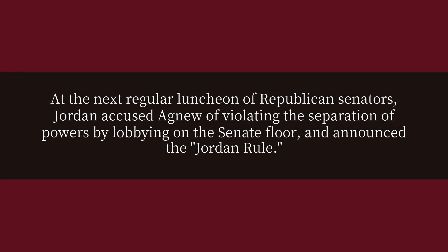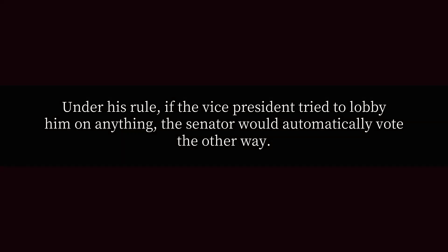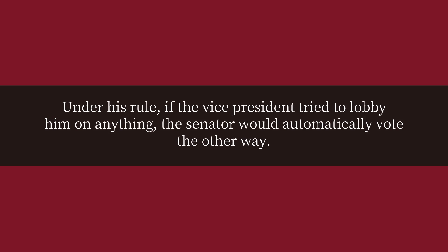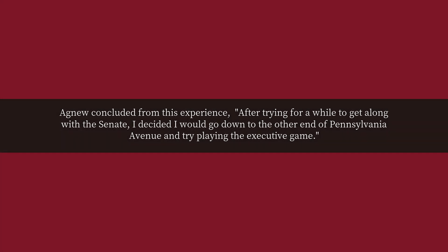At the next regular luncheon of Republican senators, Jordan accused Agnew of violating the separation of powers by lobbying on the Senate floor, and announced the Jordan Rule. Under his rule, if the vice president tried to lobby him on anything, the senator would automatically vote the other way. Agnew concluded from this experience: 'After trying for a while to get along with the Senate, I decided I would go down to the other end of Pennsylvania Avenue and try playing the executive game.'